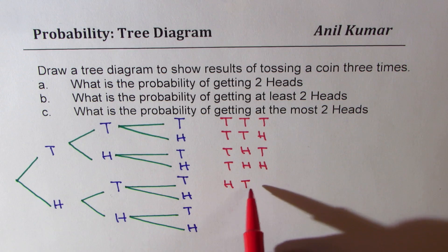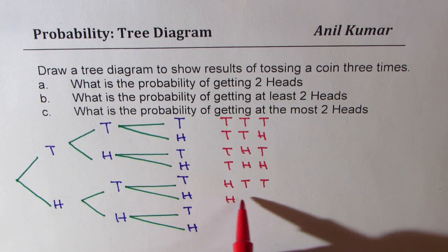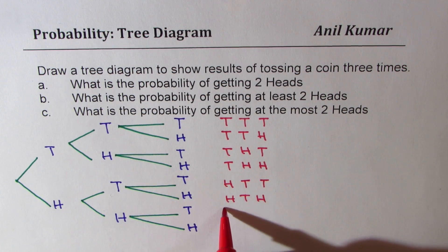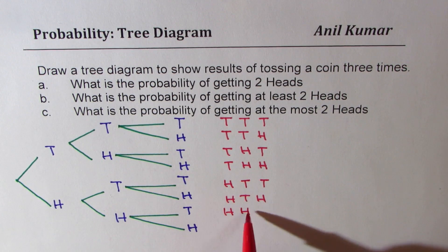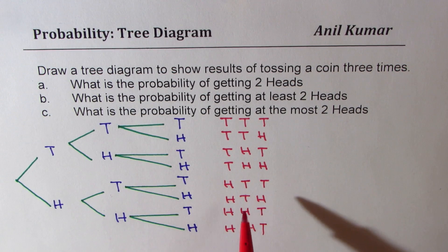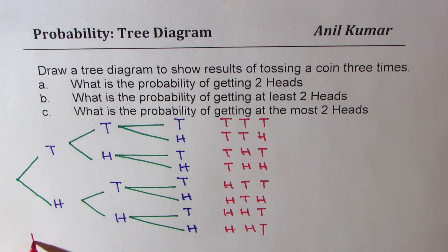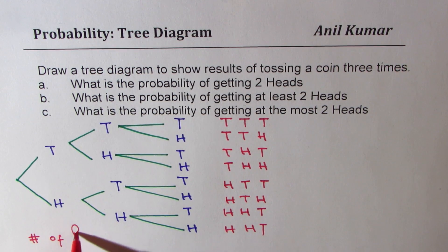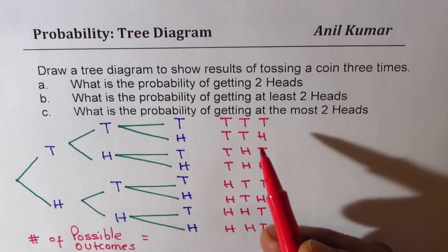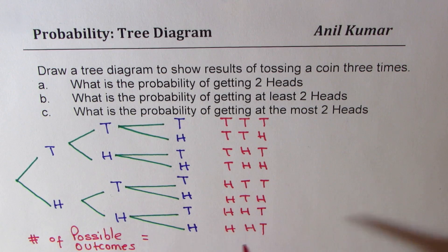Now if the first toss results into head, in that case the second could be tail, and then with that we could have tail or head. In the last case, if head is what we get first, it could be followed by another head, after which we could get either a tail or a head. So these are all the possible outcomes. The number of possible outcomes is 1, 2, 3, 4, 5, 6, 7, 8 — so that is the denominator for our probability.